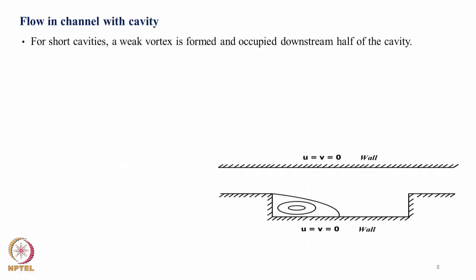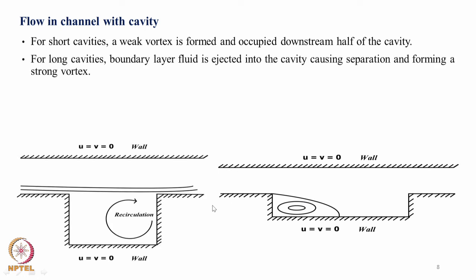The next one is flow in a channel with a cavity. The first problem that we discussed is a closed cavity. It is also possible to have a cavity as part of the channel and that is what you are seeing here. So the top is a wall and this is a channel and suddenly you are experiencing a cavity. It is like a combination of cavity and backward facing step. So for short cavities a weak vortex is formed and occupied downstream of the cavity, and for long cavities boundary layer fluid is ejected into the cavity causing separation and forming a strong vortex. So you have two such possibilities.